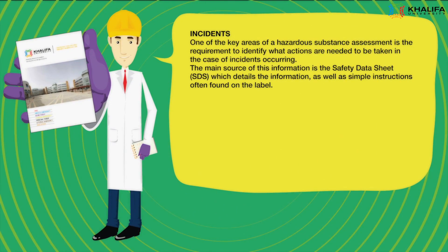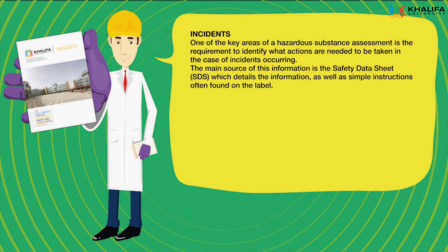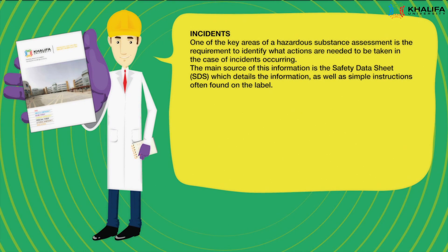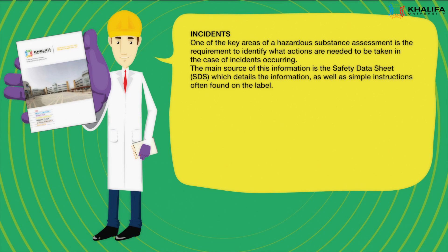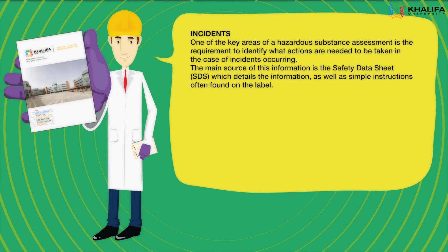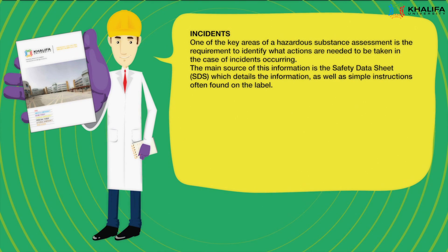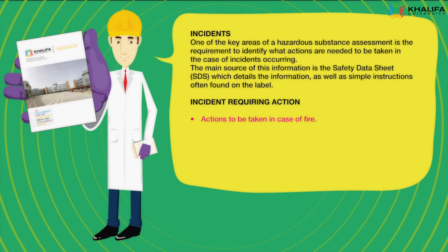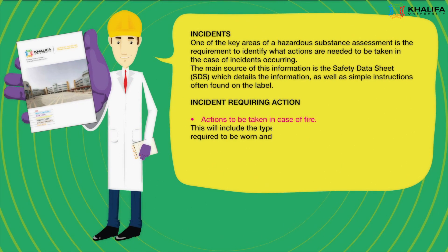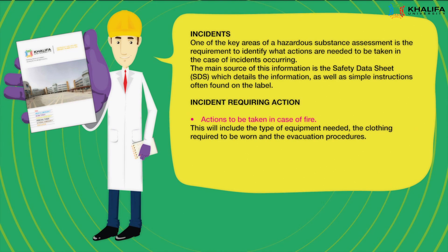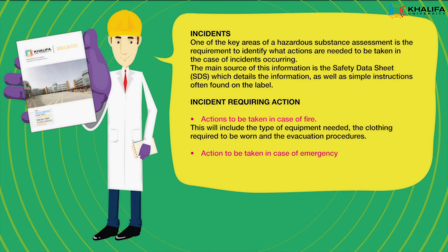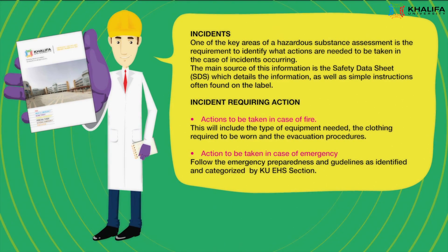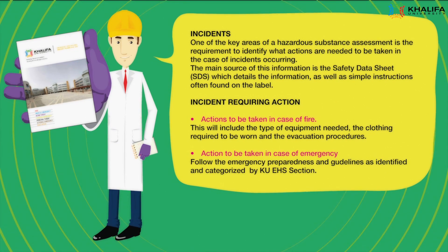Incidents: One of the key areas of a hazardous substance assessment is the requirement to identify what actions are needed in the case of incidents occurring. The main source of this information is the Safety Data Sheet (SDS), which details the information as well as simple instructions often found on the label. Actions to be taken in case of fire include the type of equipment needed, the clothing required to be worn, and the evacuation procedures. For emergencies, follow the Emergency Preparedness and Guidelines as identified and categorized by Khalifa University EHS Section.